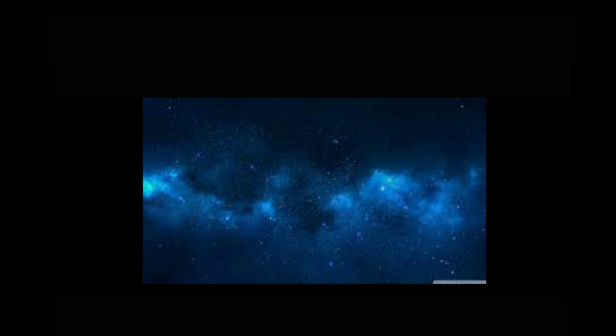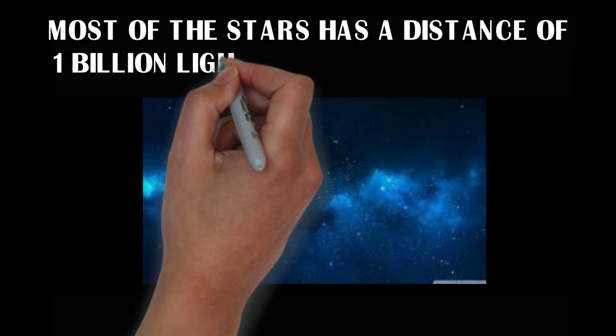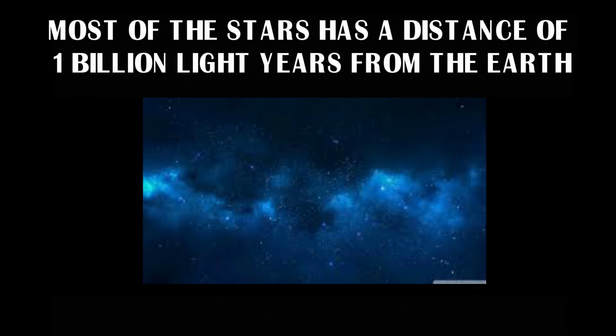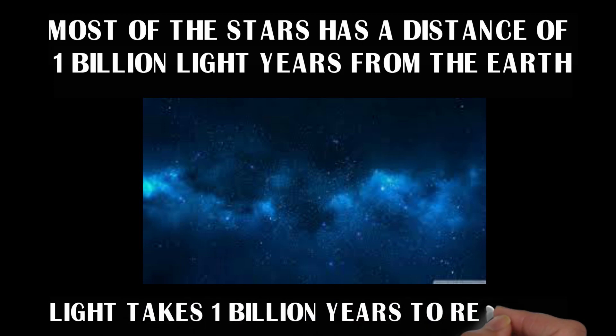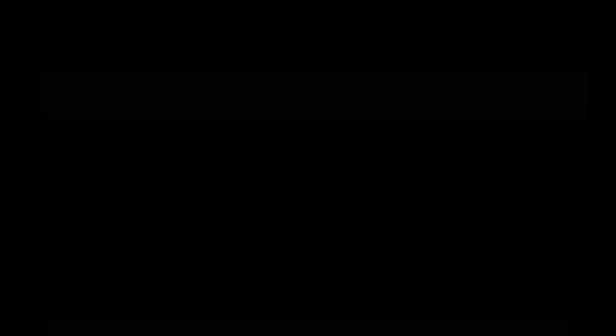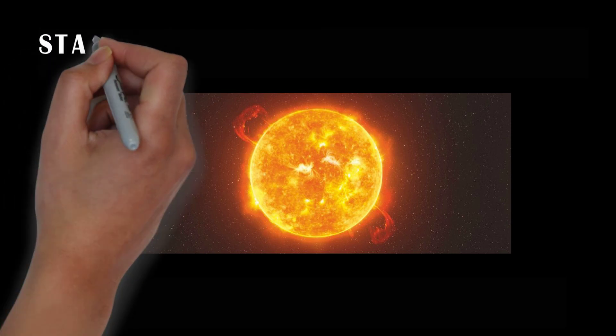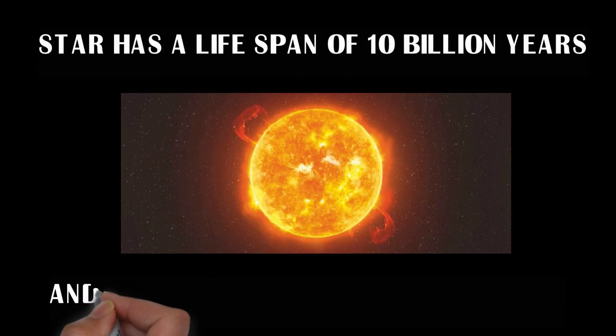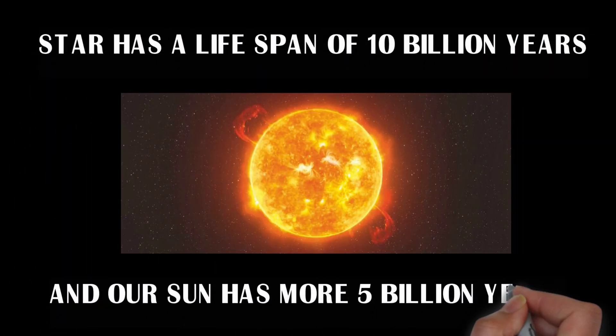Most of the stars have a distance of 1 billion light years from the earth. That means the light takes 1 billion years to reach us. You know what? A star can live 10 billion years, and our Sun has completed 5 billion years.